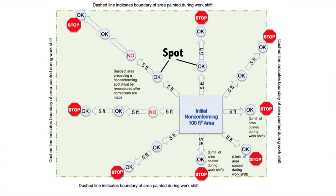If spot measurement variances result in area measurements that do not meet the specification, then additional spot measurements are required radiating outward in eight directions from the non-conforming area to determine the magnitude of the non-conforming thickness. If there is no place to measure in a given direction, then no measurement in that direction is necessary. Spot measurements are obtained in each direction up to the maximum surface area coated during the work shift, until two consecutive conforming spot measurements are obtained in that direction, or until no additional measurements can be made.